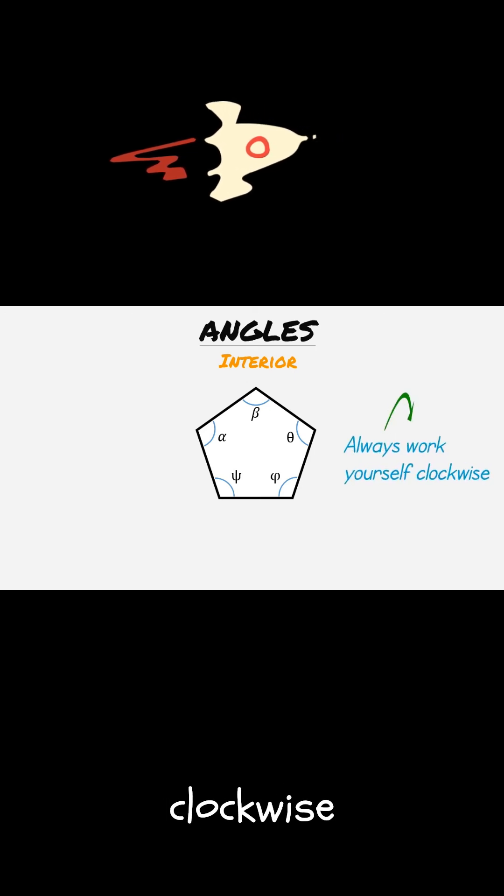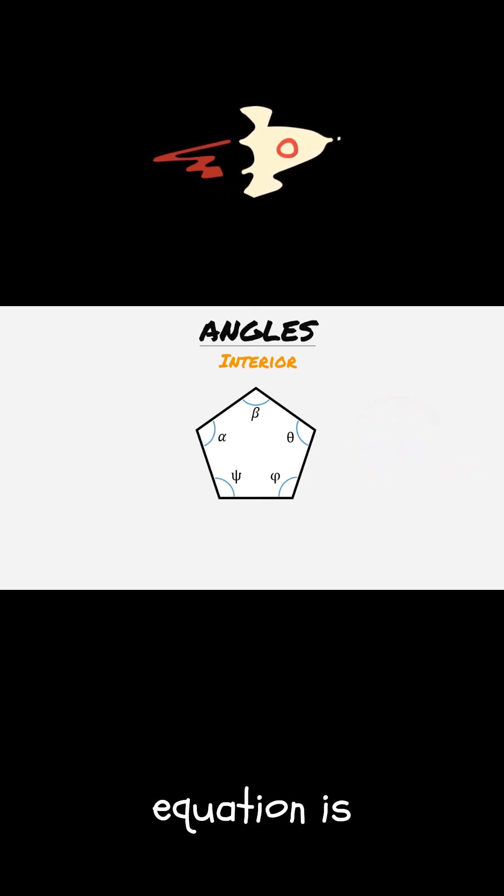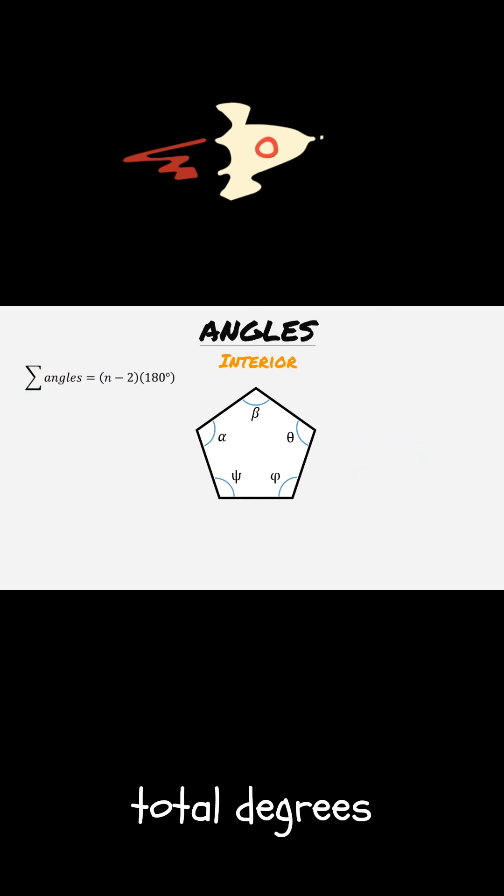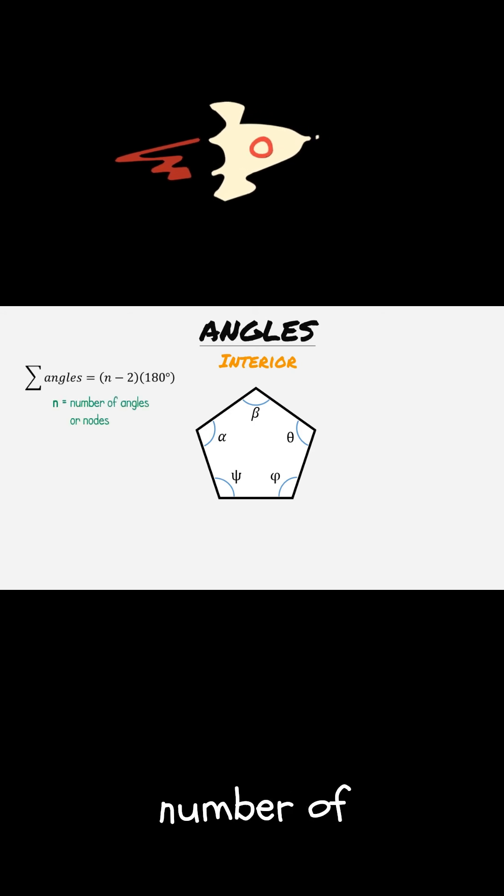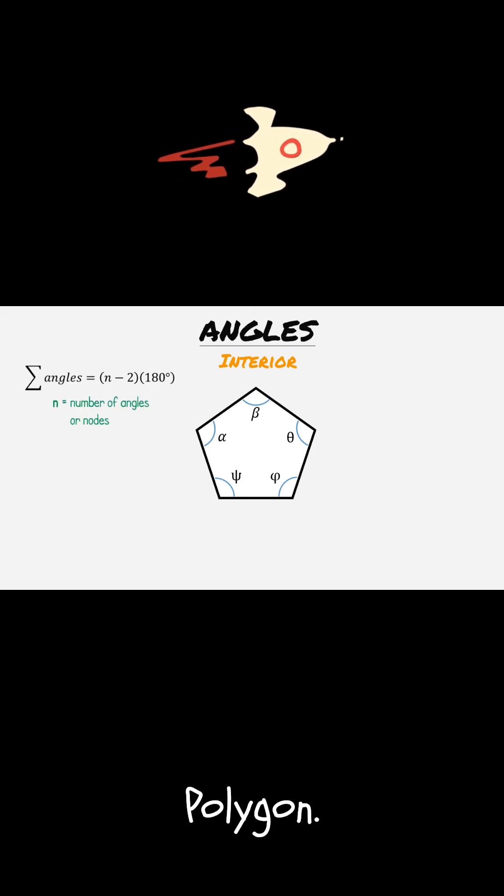Always work yourself on a clockwise pattern. Our first equation is used to determine the total degrees in any closed polygon. In this equation, the letter n is the total number of angles or knots on the polygon.